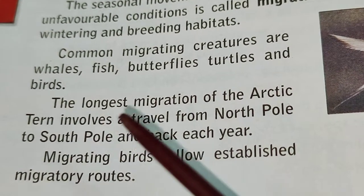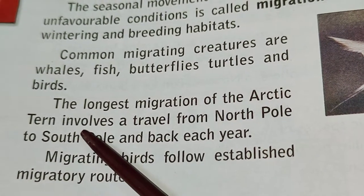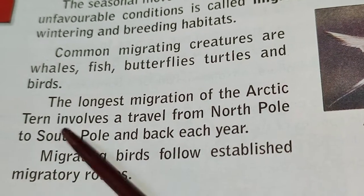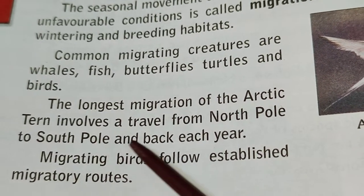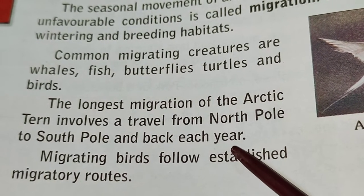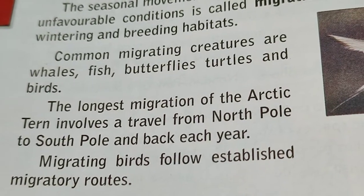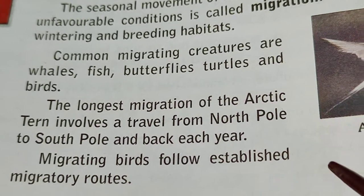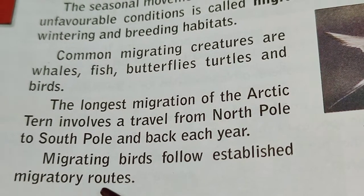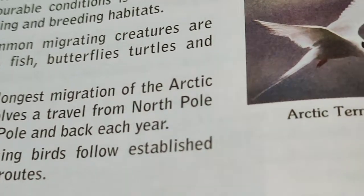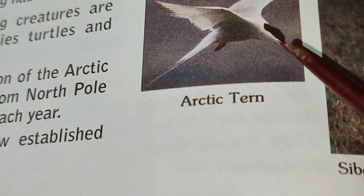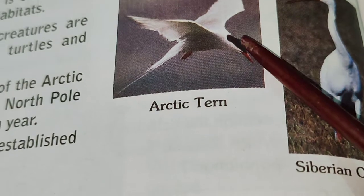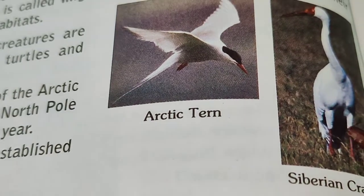The longest migration of the Arctic tern involves travel from the North Pole to the South Pole and back each year. Migrating birds follow an established migratory route so that they can come back to their original habitat.